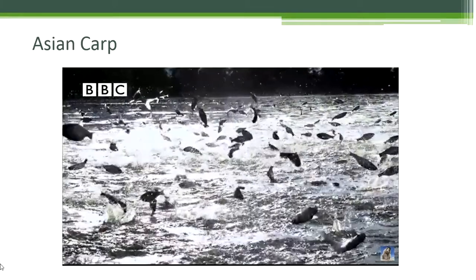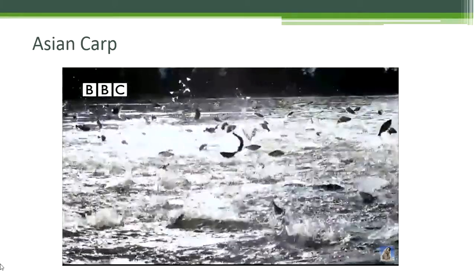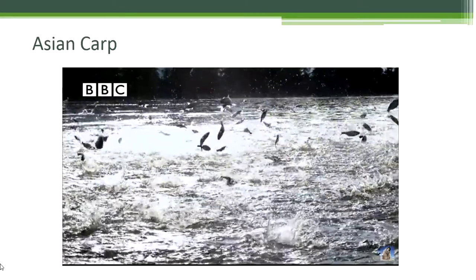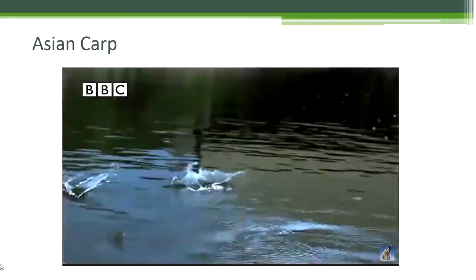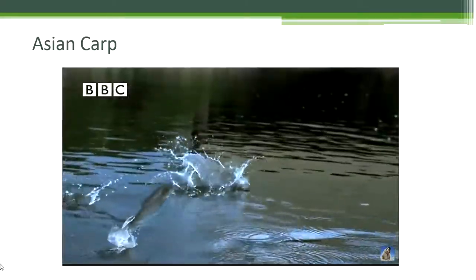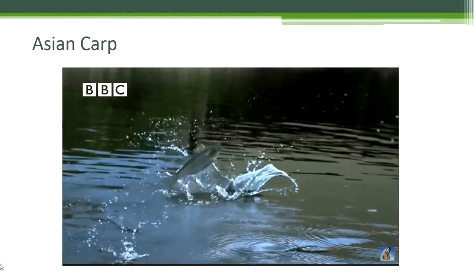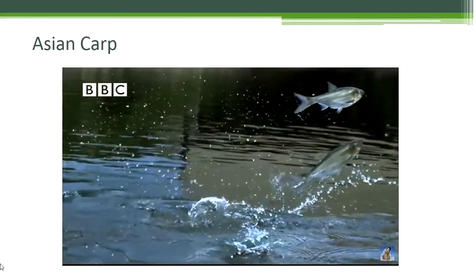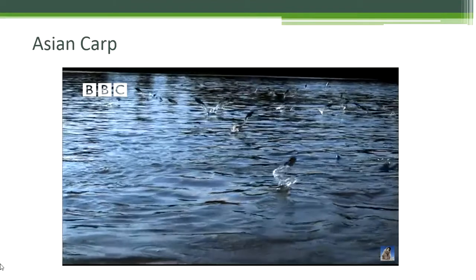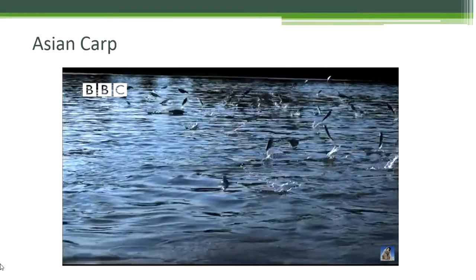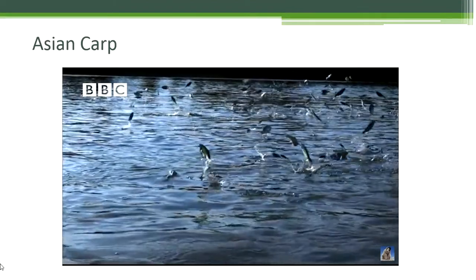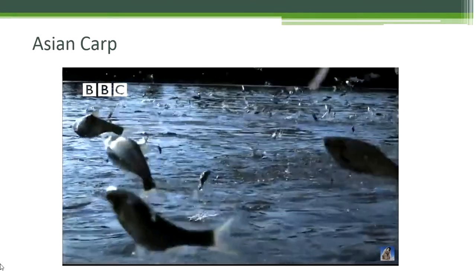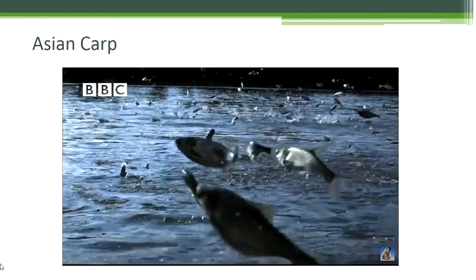Asian carp are a destructive force for both native species in the rivers and humans in the water. In this video, you can see fish jumping out of the water as boats go by. It's believed that boat motors create pressure waves that travel through the water. The carp detect the pressure waves and think there's a predator close, so they jump out of the water as a survival tactic.